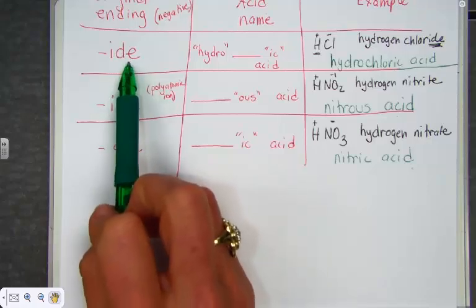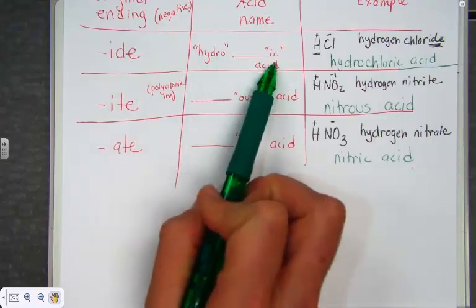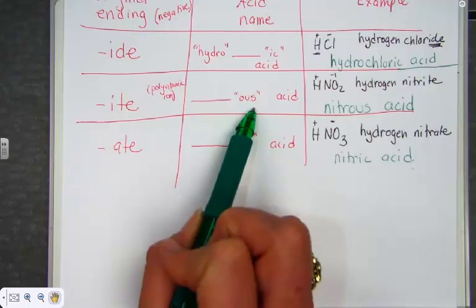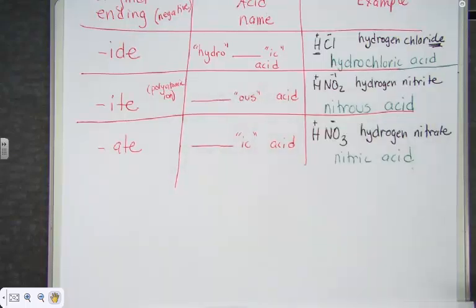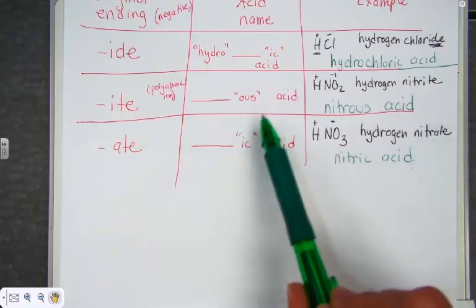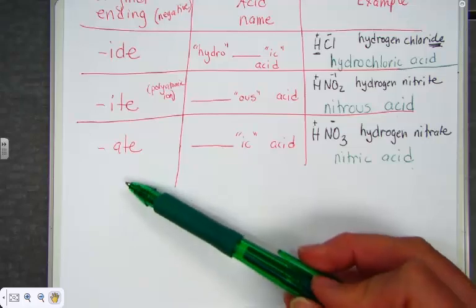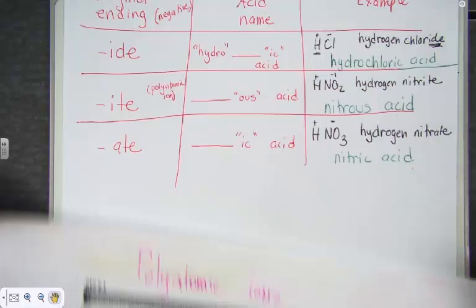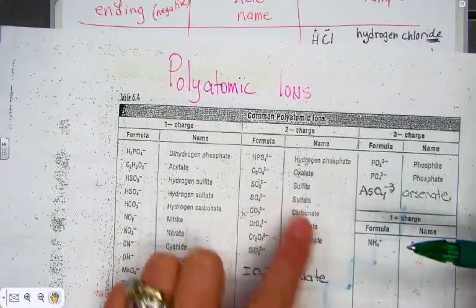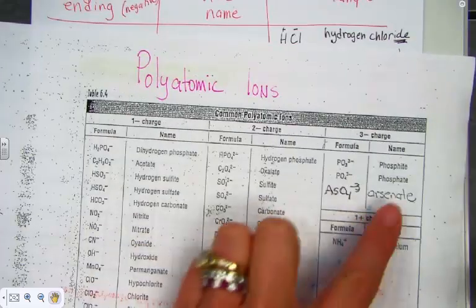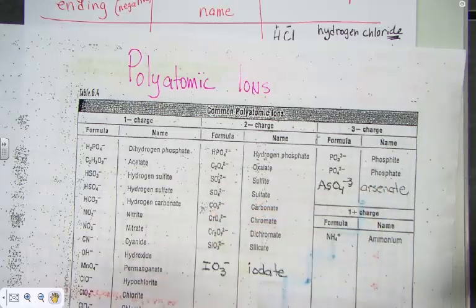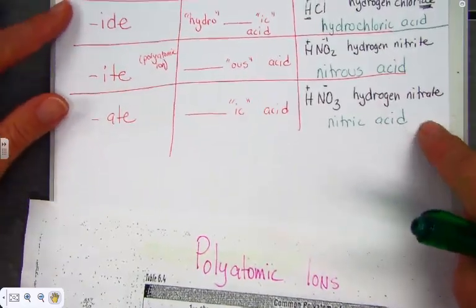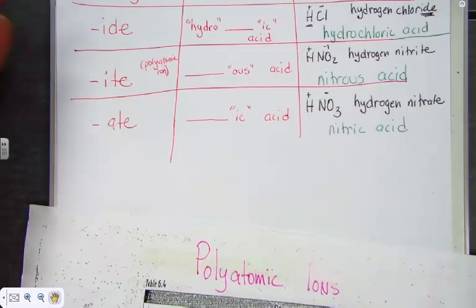If the compound ended with -ide, hydro, root word -ic. If the compound ended with -ite, -ite turns to -ous and we get chlorous, nitrous, sulfurous, acids, would be an example. -ite turns to -ous. And if a compound originally ended with -ate, -ate turns to -ic. And we had an example, nitric acid. Sulfuric acid. Carbonic acid. Phosphoric acid. Here I'm going directly to the root word and ending it with -ic. We don't need to say hydro because we said the last name acid. And we know acids always start with hydrogens.